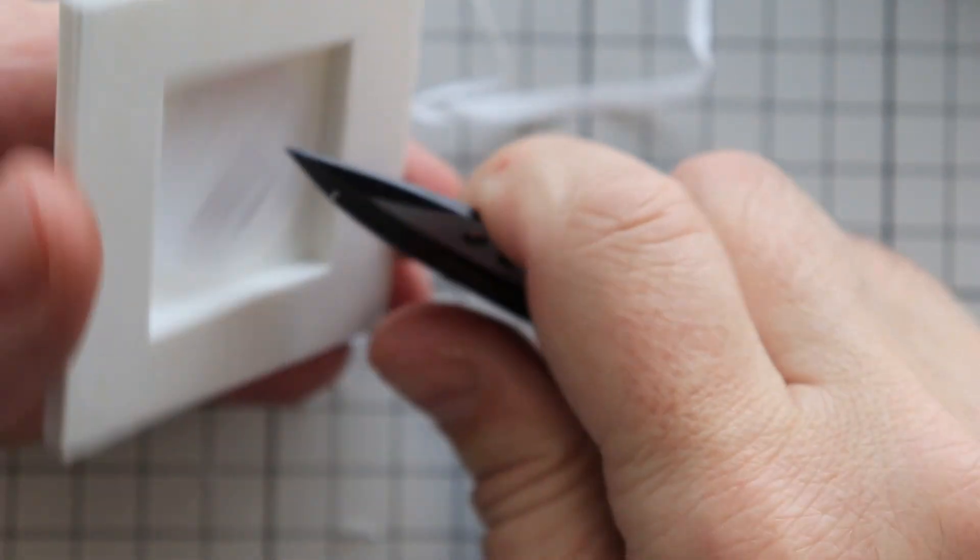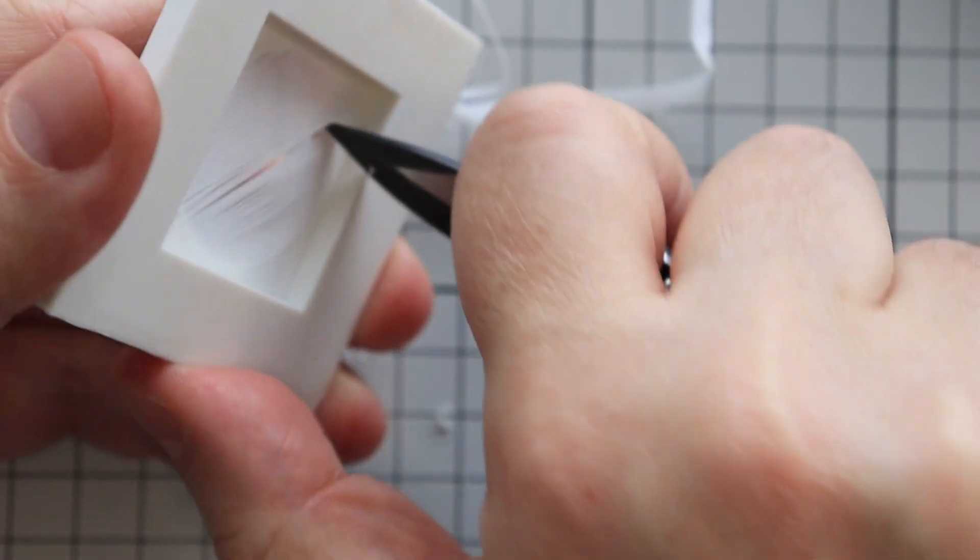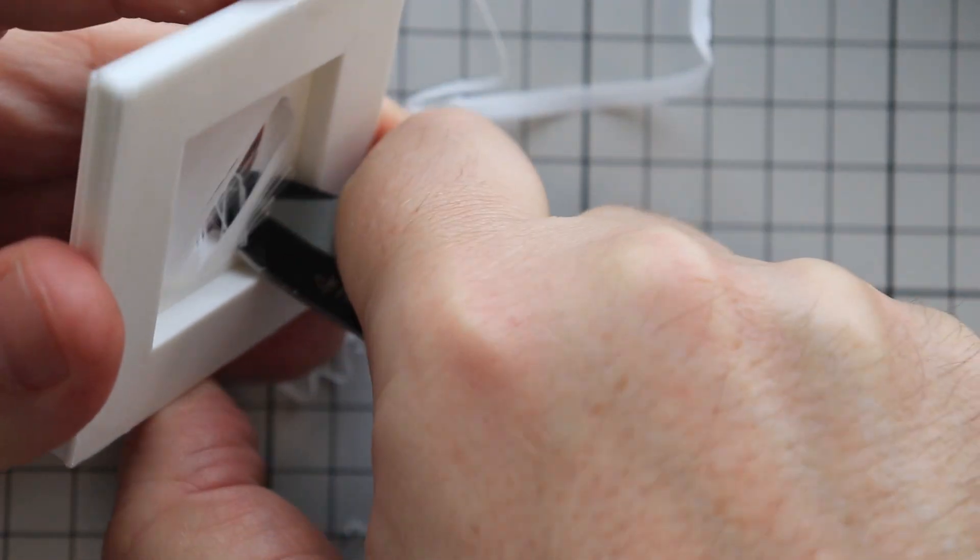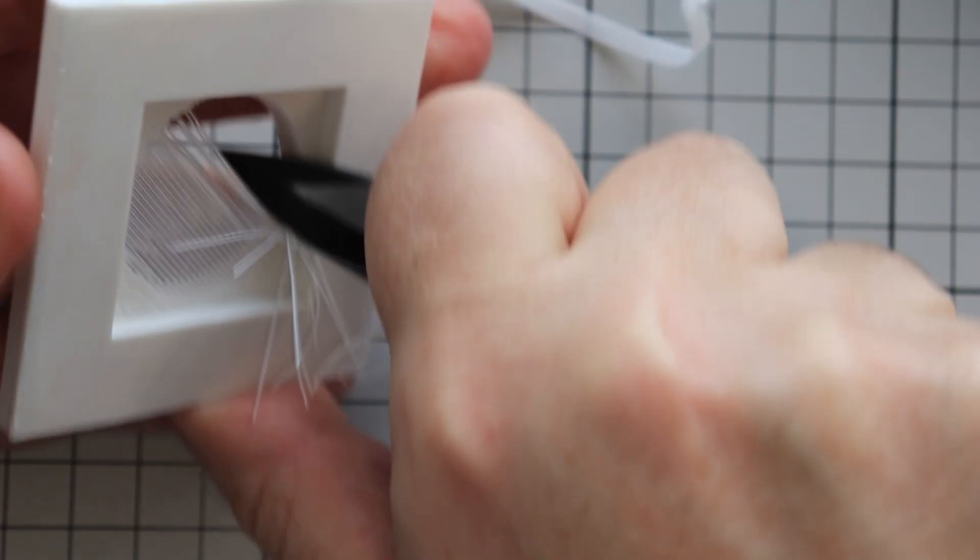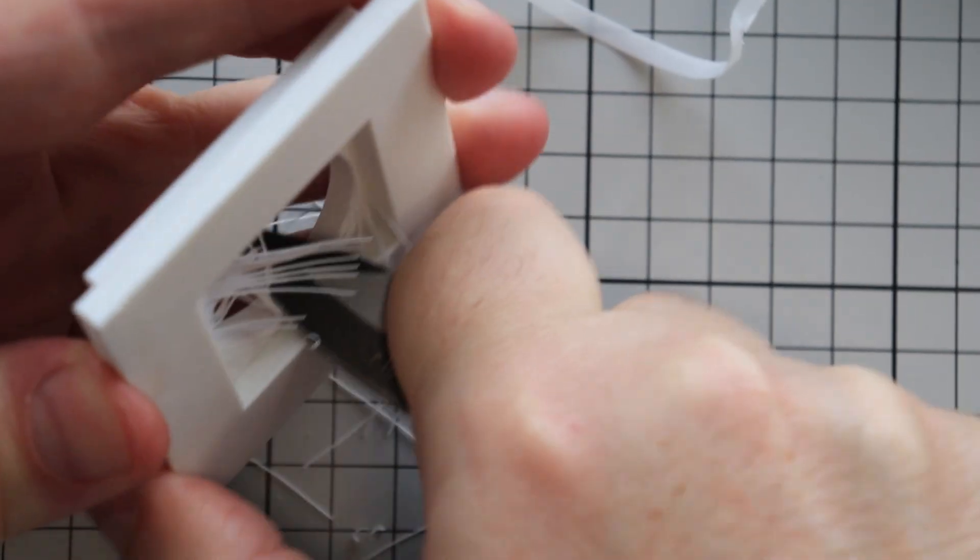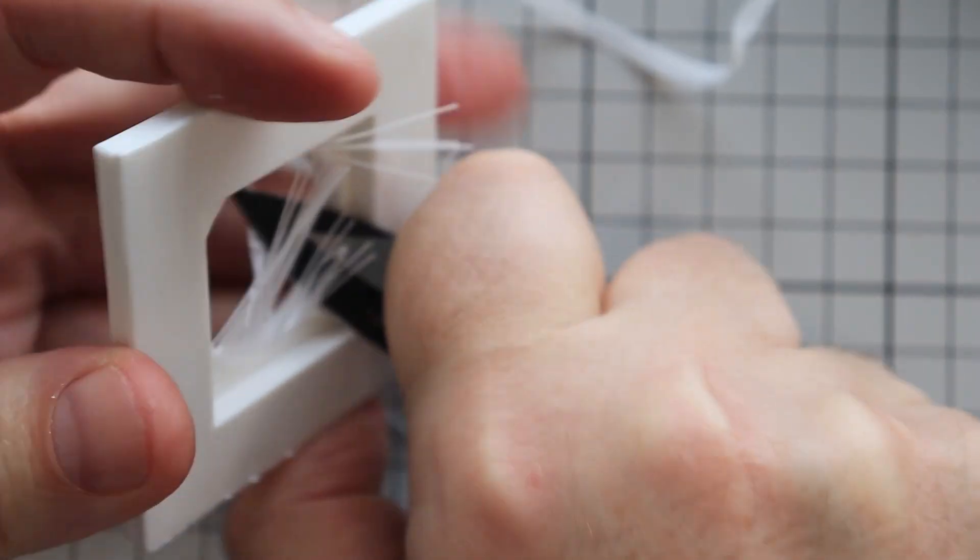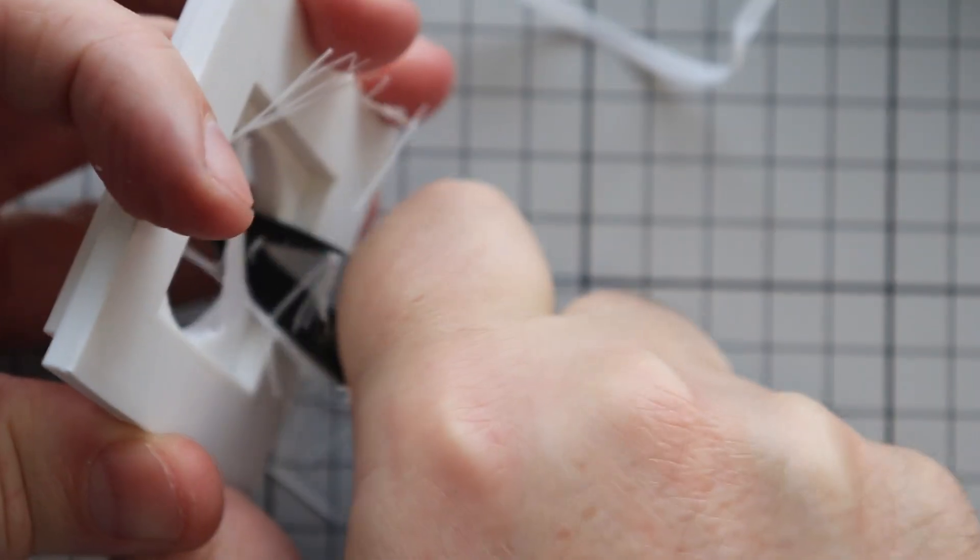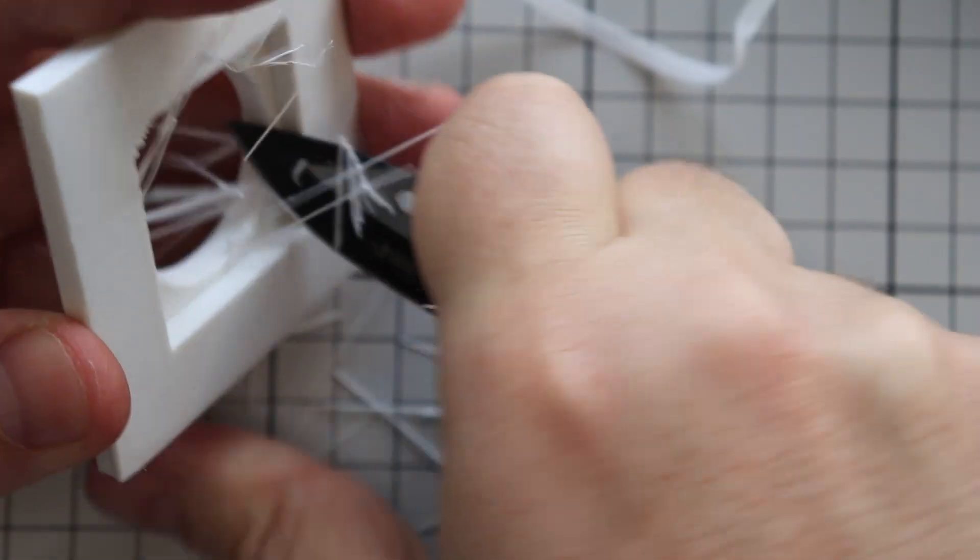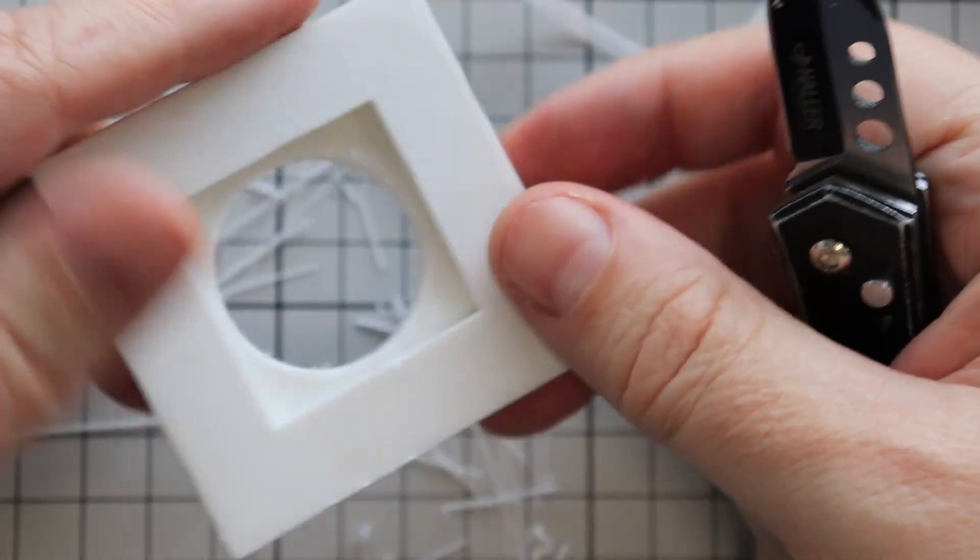Now it's very easy to remove with a knife, and similar is removing the elephant foot from the printing. Now let's clean this sacrificing layer. I have to start somewhere with the cutting. Then it's done.